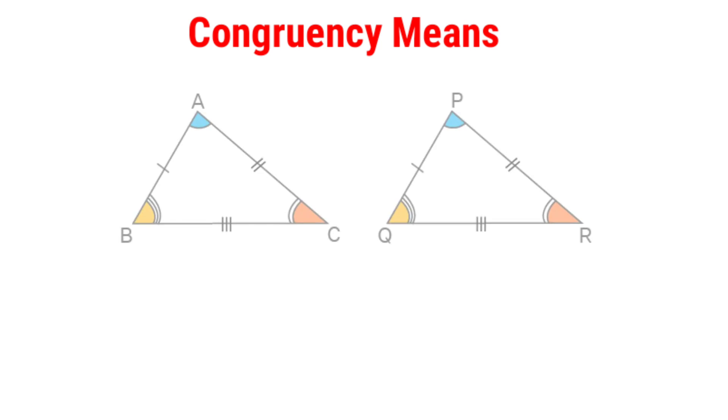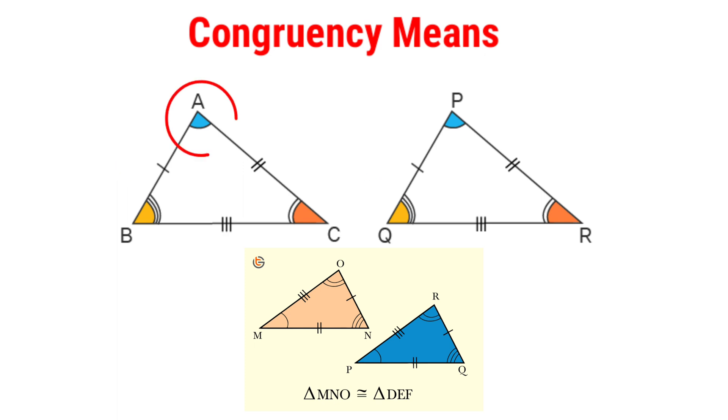So congruency means two figures or objects are congruent if they have the same shape and size. In this sense, two plane figures are congruent implies that their corresponding characteristics are congruent or equal, including not just their corresponding sides and angles but also their corresponding diagonals, perimeters, and areas.